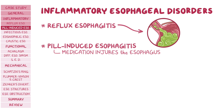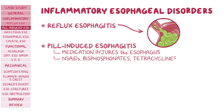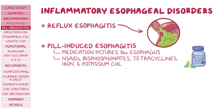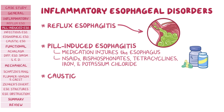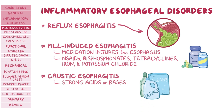Pill-induced esophagitis is associated with medications like nonsteroidal anti-inflammatory drugs or NSAIDs, bisphosphonates, tetracyclines, iron, and potassium chloride. In caustic esophagitis, caustic agents such as strong acids like vinegar or strong bases like detergents cause esophageal lesions.